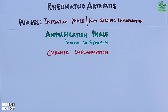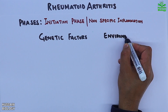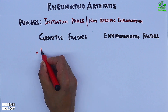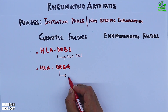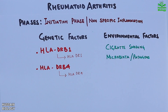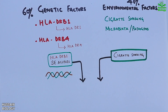The initiation phase starts with two primary risk factors: genetic factors and environmental factors. The genetic factors include genes HLA-DRB1 and HLA-DRB4, whereas environmental factors include cigarette smoking and pathogens. Both HLA-DRB1 and cigarette smoking can independently lead to rheumatoid factor (RF) production.